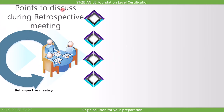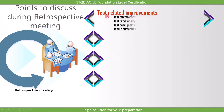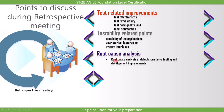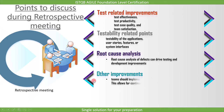Let's see some examples of improvement decisions we can discuss in a retrospective meeting. We can focus on test-related improvements such as test effectiveness, test productivity, test case quality, and team satisfaction. We can also discuss testability of the applications, user stories, features, or system interfaces. The next point is root cause analysis — root cause analysis of defects can drive testing and development improvements. Teams should implement only a few improvements per iteration, which allows for continuous improvement at a sustained pace.